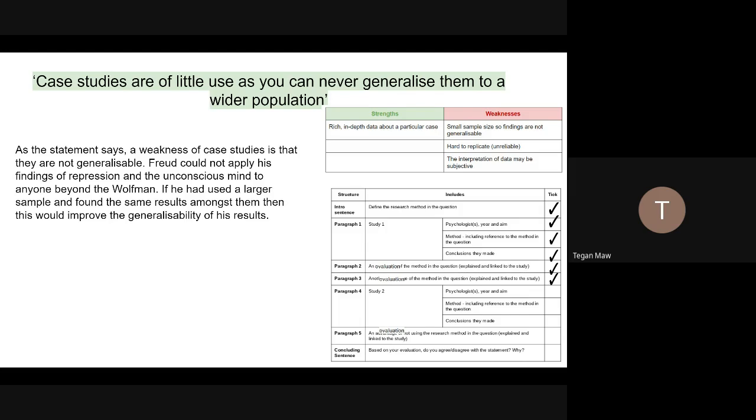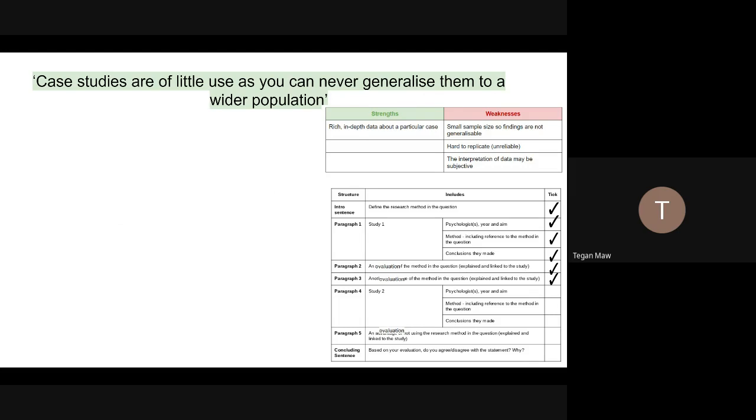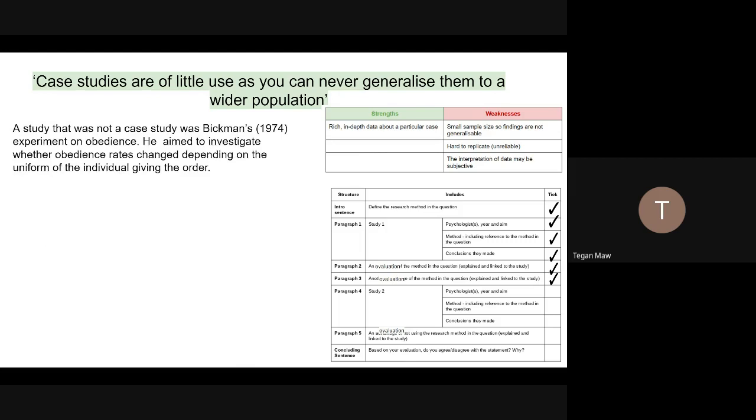You're now going to move on to do the same thing for study two. So study two could be anything that was not sleep and dreaming and that is not a case study. I just picked Bickman. A study that was not a case study was Bickman's 1974 experiment on obedience. He aimed to investigate whether obedience rates change depending on the uniform of the individual giving the order. So again, that's the psychologist, the year and the aim of the study.